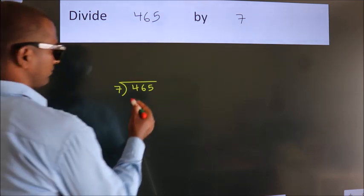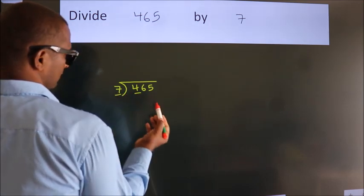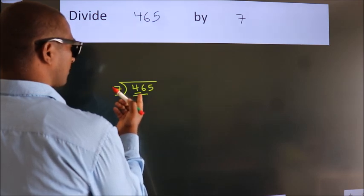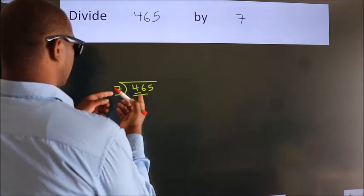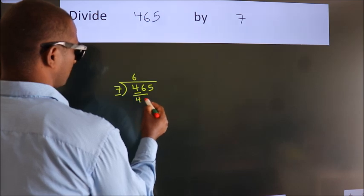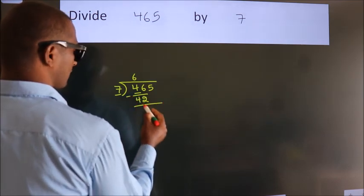Next, here we have 4, here 7. 4 is smaller than 7, so we should take two numbers: 46. A number close to 46 in the 7 table is 7×6, 42. Now, we should subtract. We get 4.